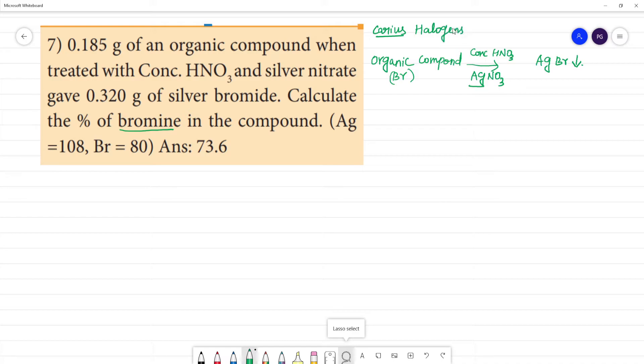Carius method is the same type of formula. Organic compound weight is 0.185. Now, we can calculate the silver bromide weight is 0.32 grams. Now, let's calculate the percentage of bromine. Carius method is the percentage of bromine. What do we calculate? Carius method is the same. This is the compound number.